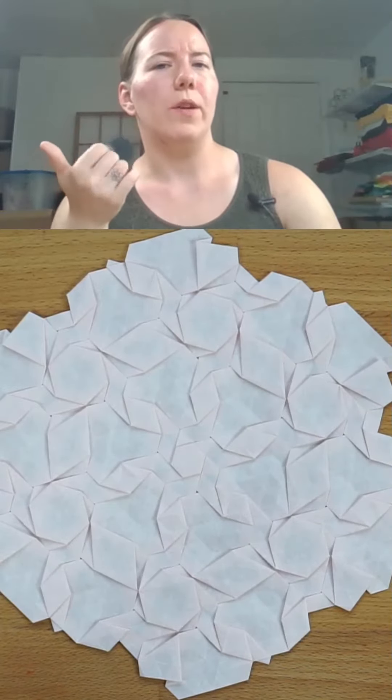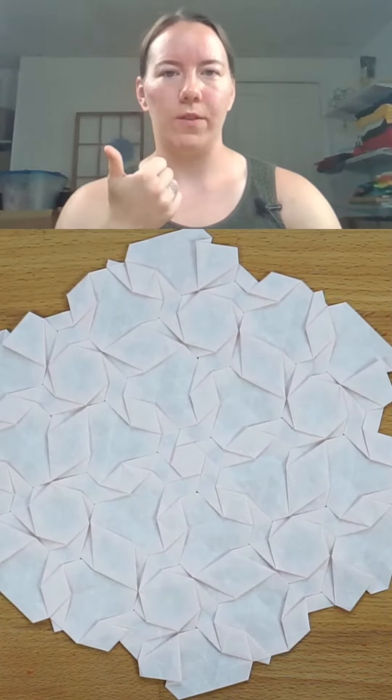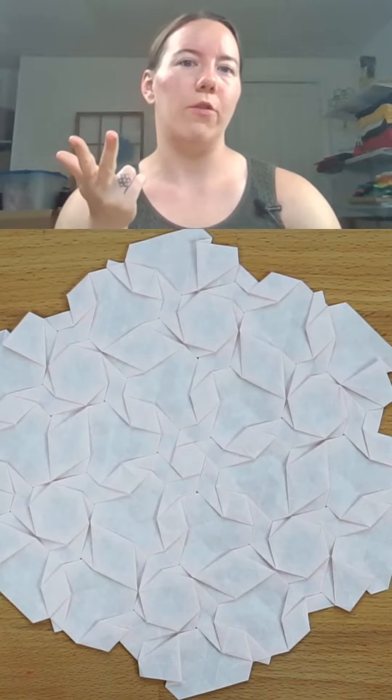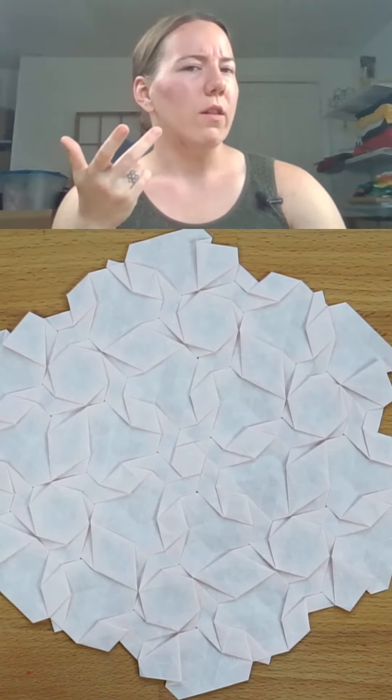So you've seen me use extended symmetry with the hexagons and triangle sixfold tiling, with the square tiling, with the equilateral triangle tiling. Can you do it with the other tilings?